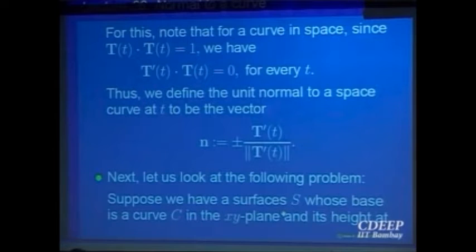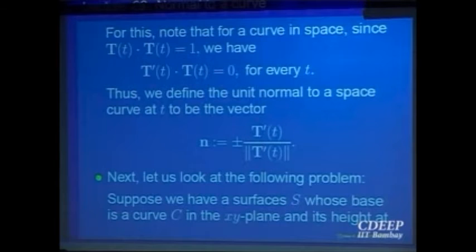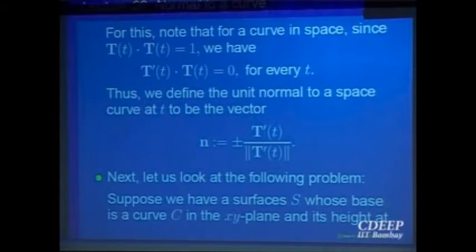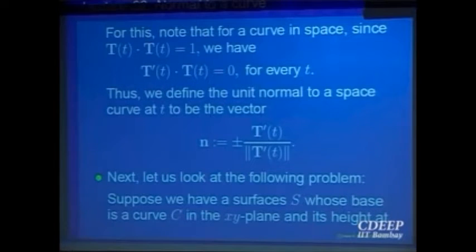Let us look at how these curves and vectors help us. Suppose we have a surface in space like a thin sheet that is bent — the base is some curve, the top is some function. We want to find the area of this kind of sheet. There is a sheet with a base that is a curve, and at each point the height is given by a function z = f(x, y). We want to find the area of this surface.